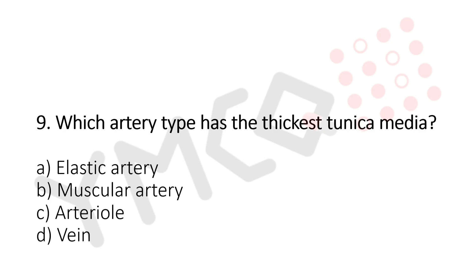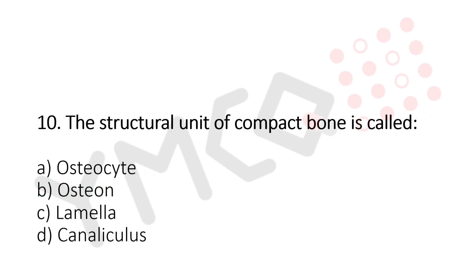Question 9: Which artery type has the thickest tunica media? Option A: elastic artery. Option B: muscular artery. Option C: arteriole. Option D: vein. The answer is Option B, muscular artery.